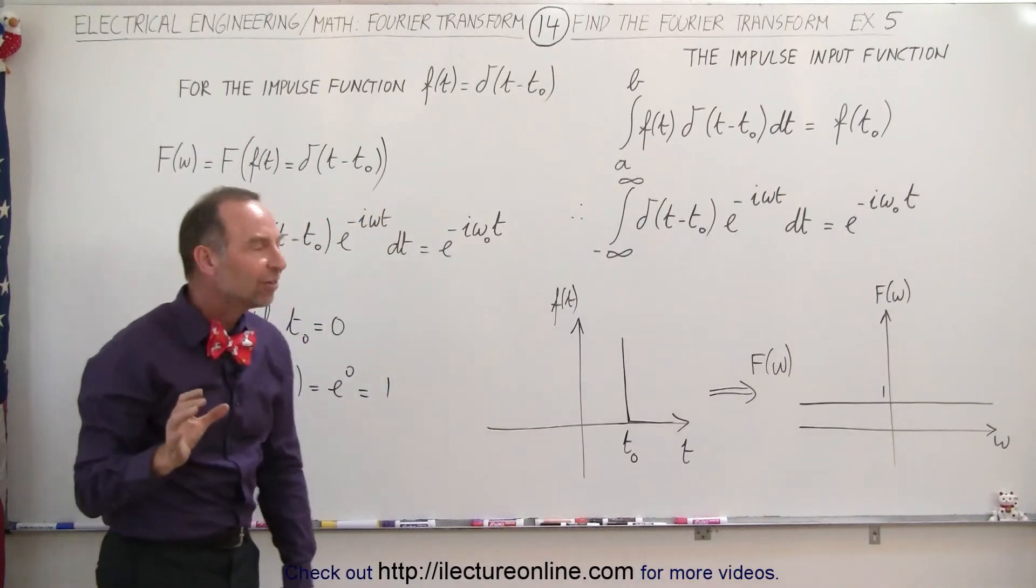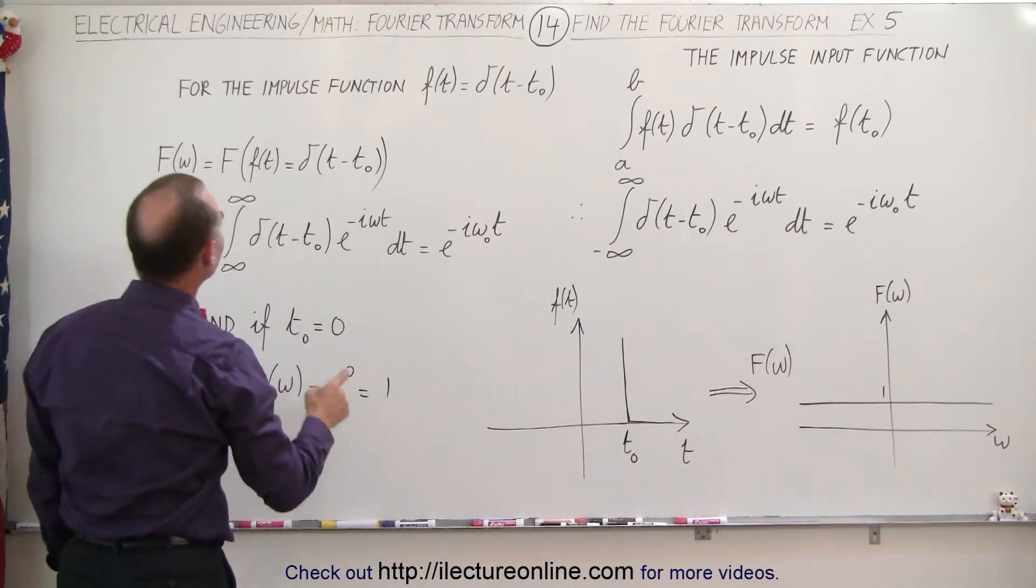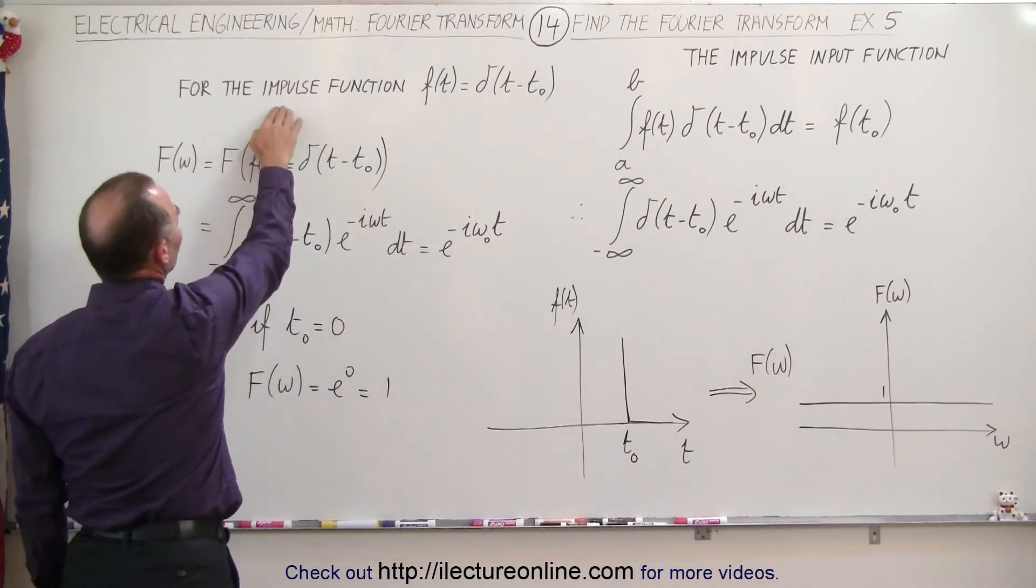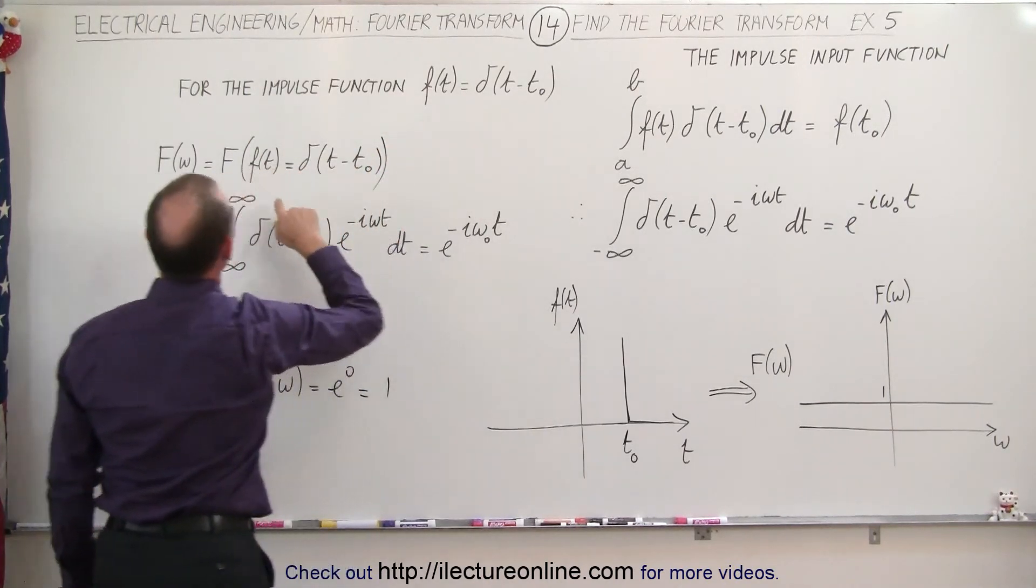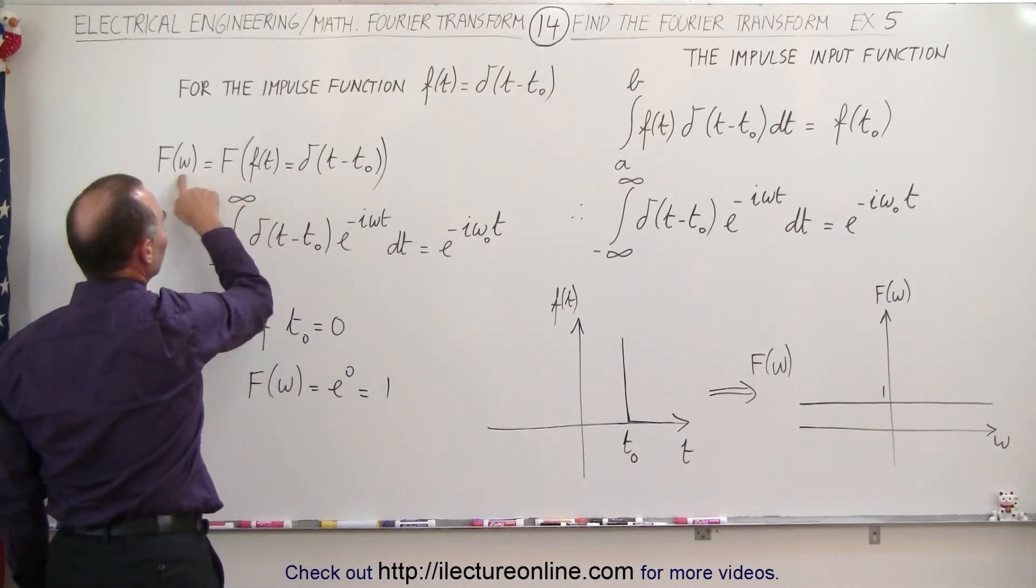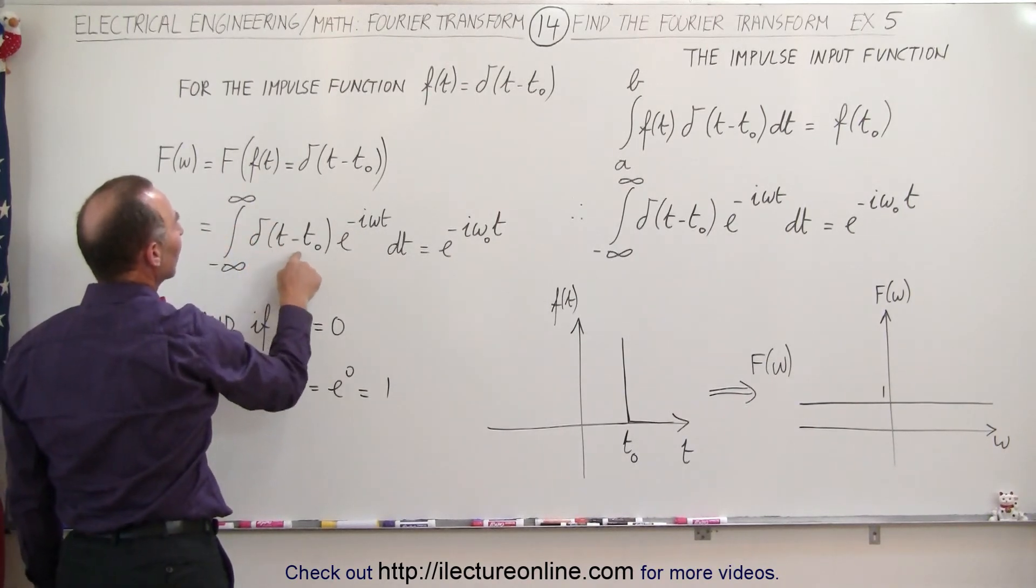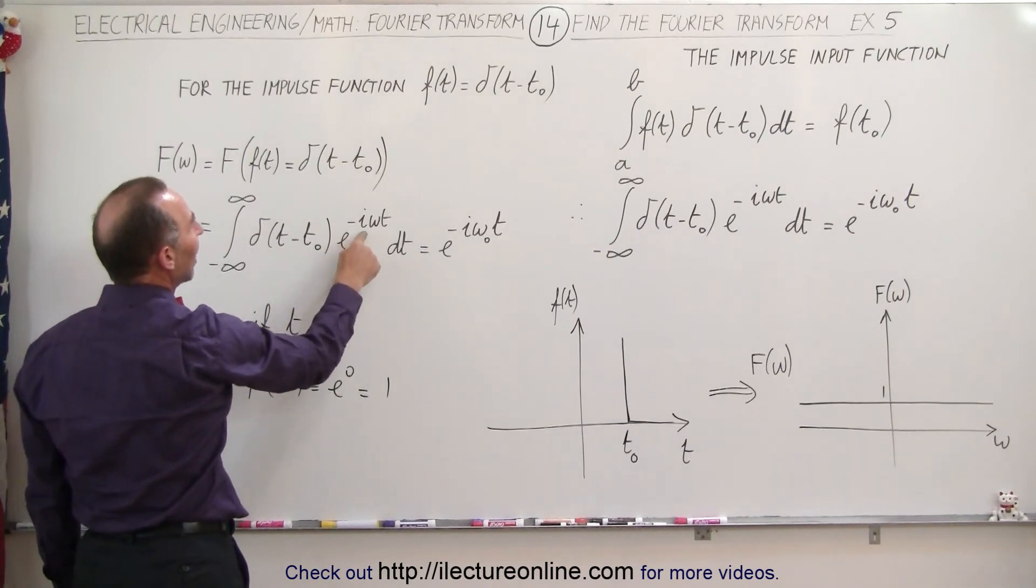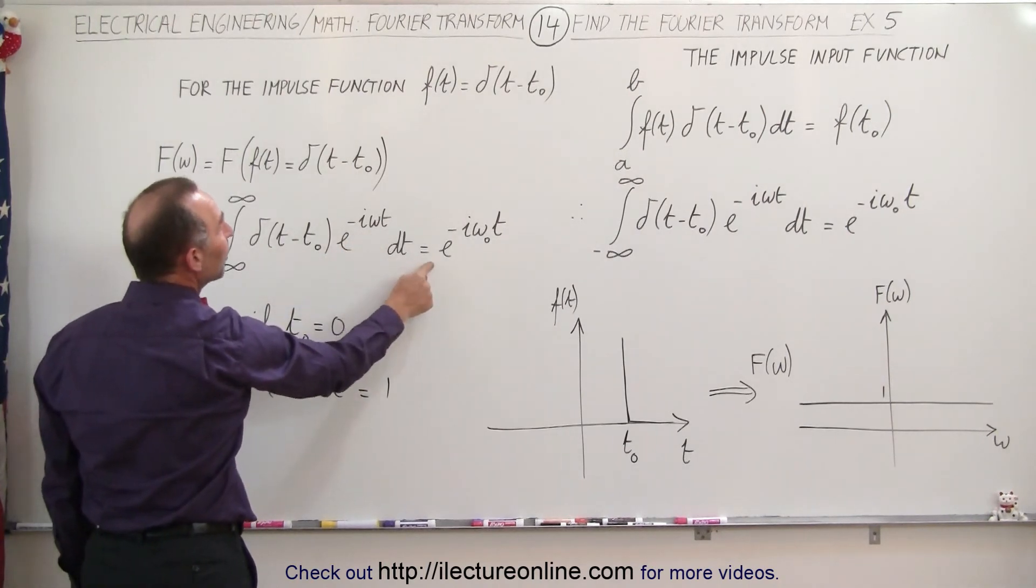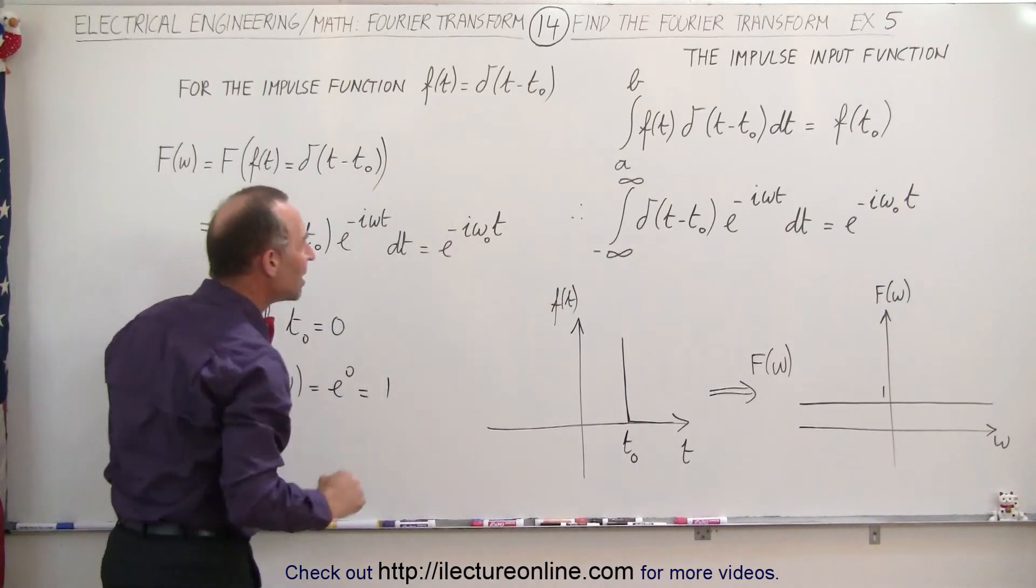So using that as a basis, we then go ahead and imagine that we have an impulse function that is a delta function, like this. So we can then take the Fourier transform of that function. It will be the integral from minus infinity to infinity of the delta function of t minus t sub-naught times e to the minus i omega t, which then simply becomes e to the minus i omega sub-naught t.